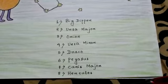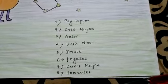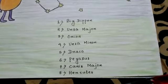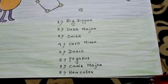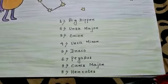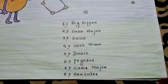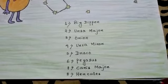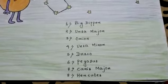Number five: the constellation which looks like the dragon is known as Draco. Number six: the constellation which looks like the flying horse is known as Pegasus. Number seven: the constellation which looks like a dog is known as Canis Major. Number eight: the constellation which looks like the Greek hero is known as Hercules.